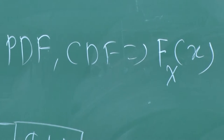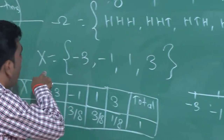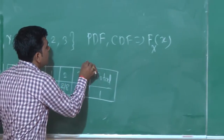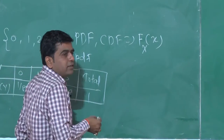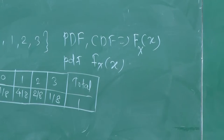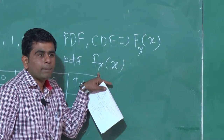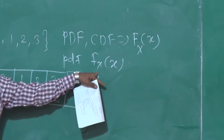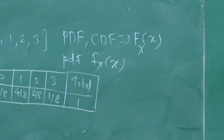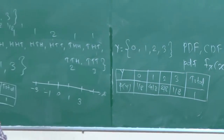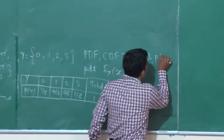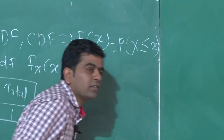This small x is nothing but the content of your random variable; here x is ranging from minus 3, minus 1, 1, and 3, and capital X stands for random variable X. Then we are having small PDF, that is small f of x or capital X. This small f stands for probability density function of X. X takes values minus 3, minus 1, 1, and 3. F(x) is defined as the probability of your X less than or equal to small x.